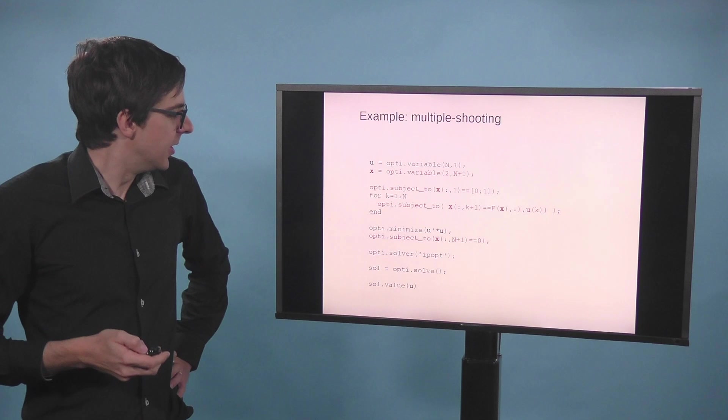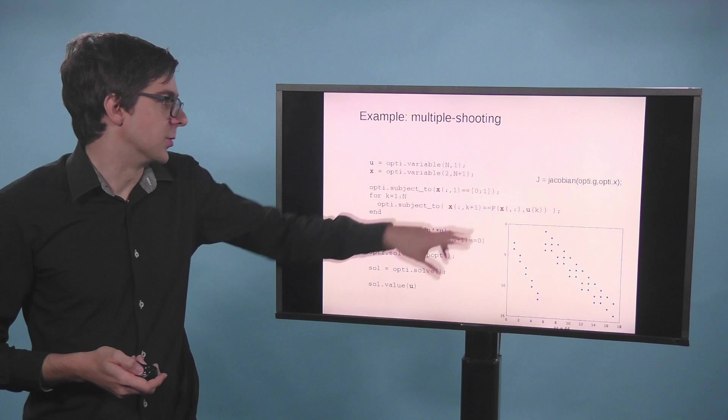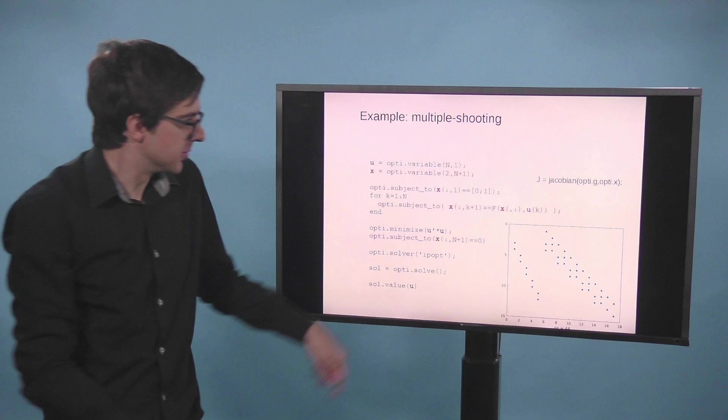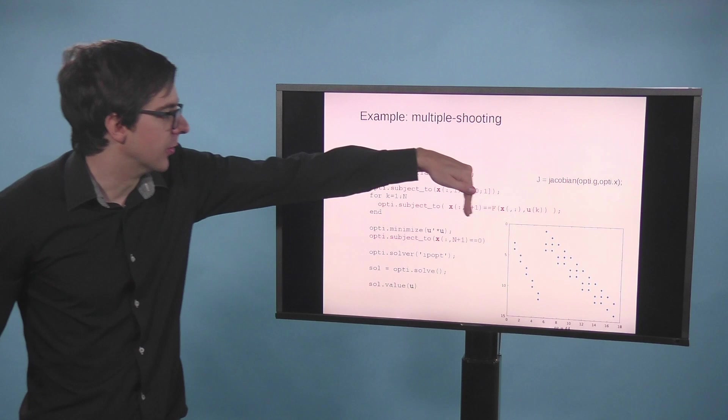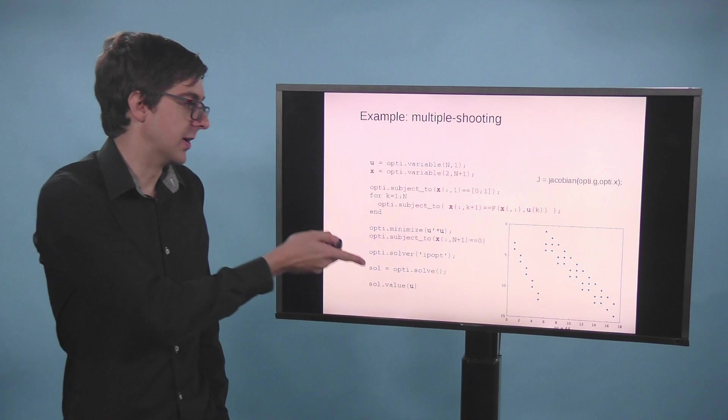We can do further introspection. We could, for example, ask for what is the Jacobian of all constraints with respect to all decision variables. That you could do with a simple line like this. And you could plot it in a picture like here. So here on the vertical axis, we have all constraints. And on the horizontal axis, we have here the control variables and here the state variables. And as you see, CASADI automatically does the derivation and also exploits the sparsity of the structure.